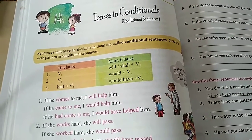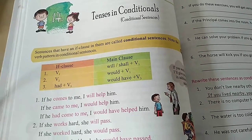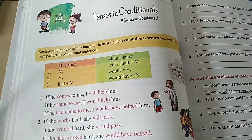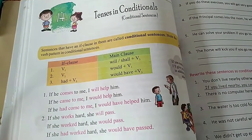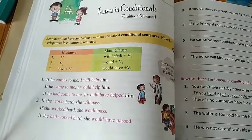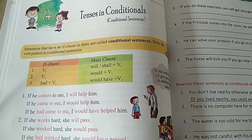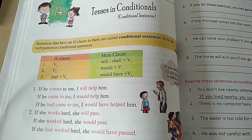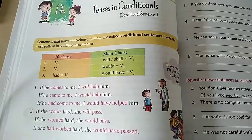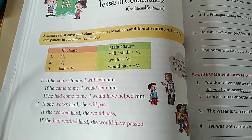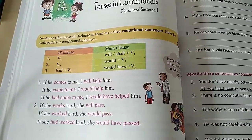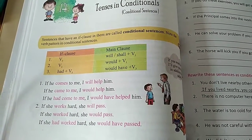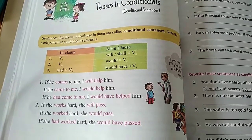What is tense? Tense means time — present, past, and future. And conditional: a sentence that has an 'if' clause in it is called a conditional sentence. So we look at the if clause, helping verb, and verb forms.